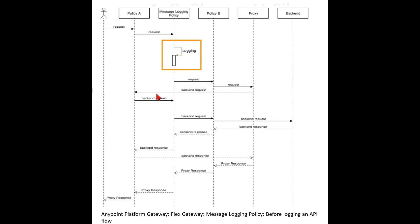Policy A is connected to message logging policy via backend request, and message logging policy is connected to policy B via backend request, and policy B is connected to backend via backend request. Backend is connected to policy B via backend response, and policy B is connected to message logging policy via backend response, and message logging policy is connected to policy A via backend response.